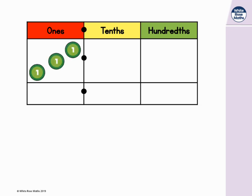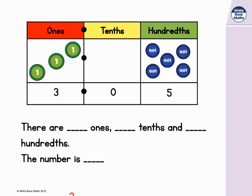Let's look at another example. Now in the place value grid, we have one, two, three ones. There are no tenths in our place value grid, so we'll use zero as a placeholder. And there are one, two, three, four, five hundredths. Let's use a stem sentence again. There are three ones, no tenths, and five hundredths. The number is three point zero five.